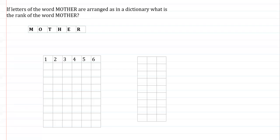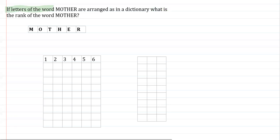In this video we are going to do a question on permutation. It says: if the letters of the word MOTHER are arranged as in a dictionary, what is the rank of the word MOTHER? As you can see, I've written the word MOTHER here and it is a six-letter word.